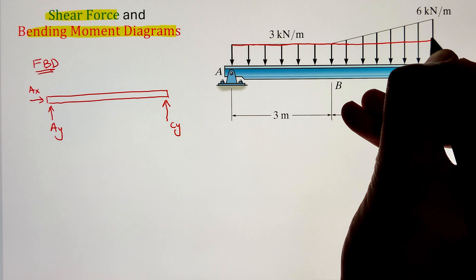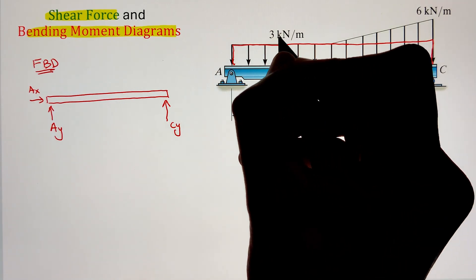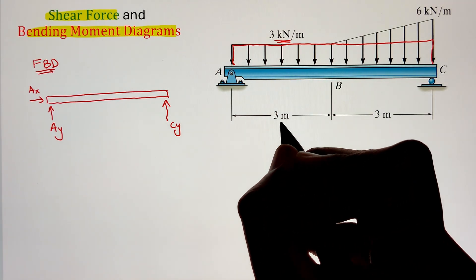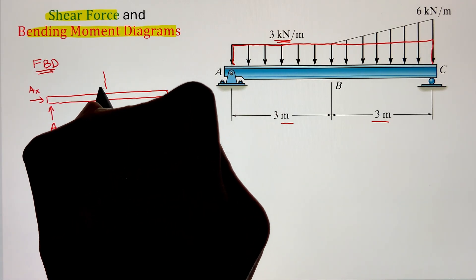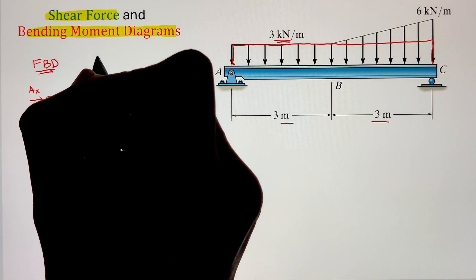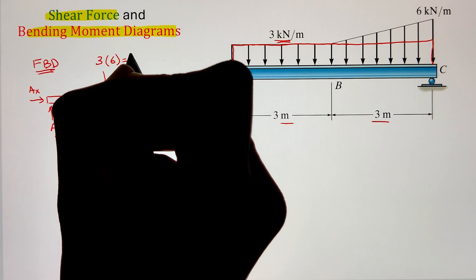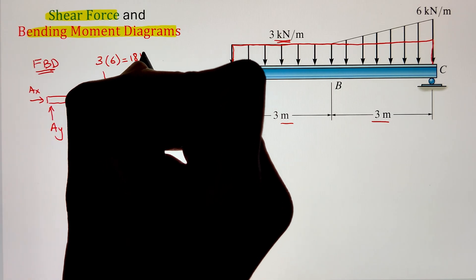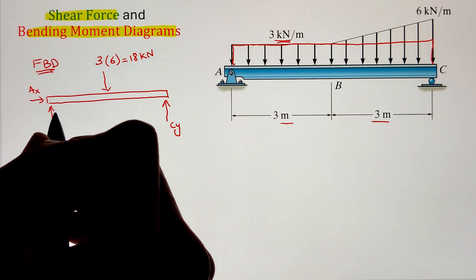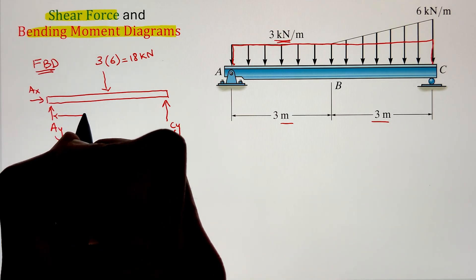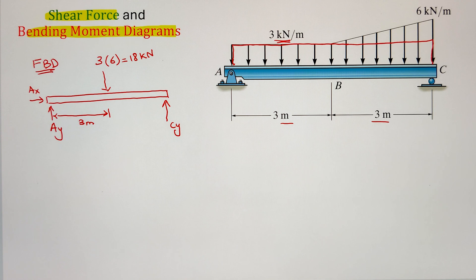We have a rectangular distributive loading. We find its area to convert it into a point load. Since we have 3 kilonewtons per meter applied over 6 meters, multiplying 3 by 6 gives a point load of 18 kilonewtons, acting at the centroid of the rectangle, which is 3 meters from point A.